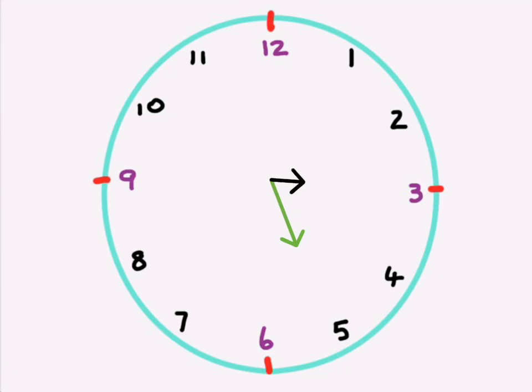We know that if it points to the three, it's quarter past. So it would be quarter past five. We know if it points to the six, it's half past. That would be half past five. And we know if it points to the nine, that's quarter to. That would be quarter to five.